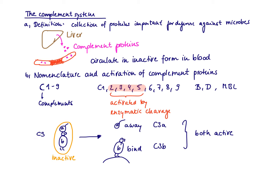Let's take C3 as an example of activation by enzymatic cleavage. C3 consists of a B and an A part, and together they are inactive. Think of it like B for bird with an apple on its head, A for apple. When the bird gets activated and flies away, the apple is not going to stay on its head — so the apple goes away, A for away, and the bird settles down, B for bind. So once C3 is activated, it becomes C3A and C3B, and both are active. This formation of the A and B parts generally happens to all complement molecules activated by enzymatic cleavage.